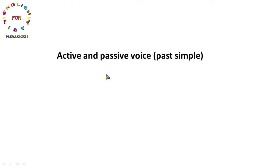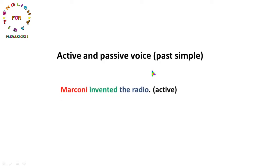عندنا القاعدة متاع الدرس اللي هي Active and Passive Voice في الماضي البسيط. نحن أخذنا في الدرس الرابع المبني للمجهول في المضارع البسيط، وهنا هنأخذه في الماضي البسيط. وهي قاعدة متشابهة جداً بفرق بسيط. الخطوة الأولى هي أن نحذف الفاعل لنحول الجملة من Active.